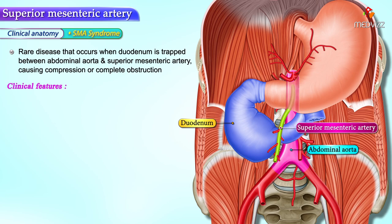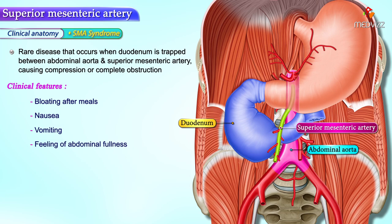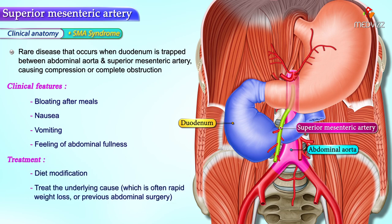The patient will present with bloating after meals, nausea and vomiting, and a feeling of abdominal fullness. Treatment includes diet modification and treating the underlying cause, which is often rapid weight loss or previous abdominal surgery. The definitive treatment would be surgical intervention.